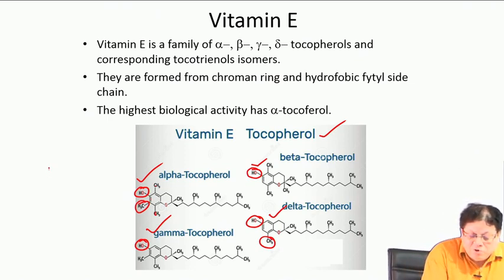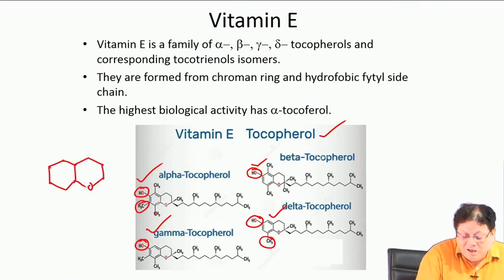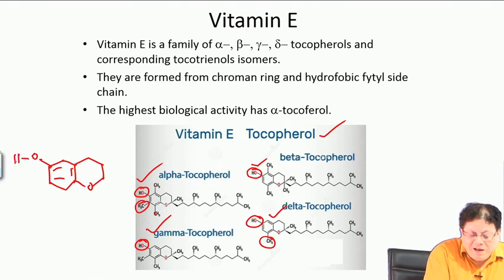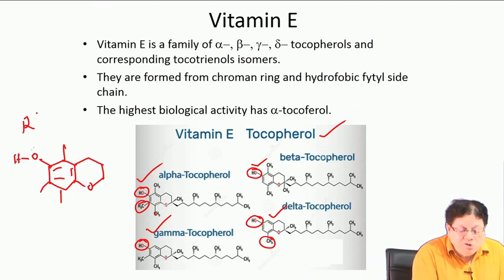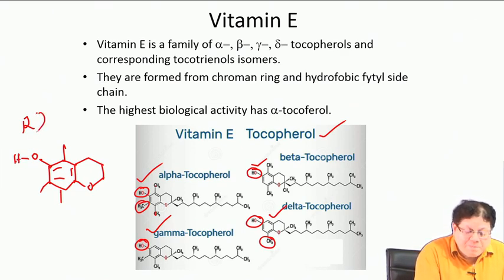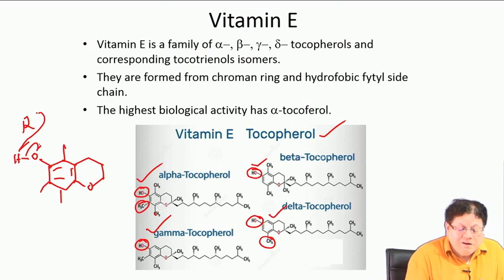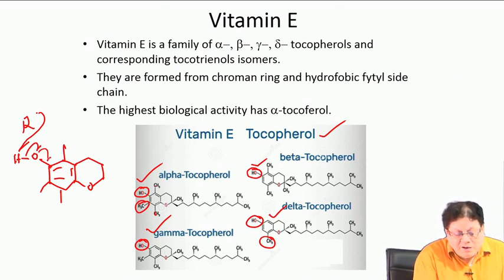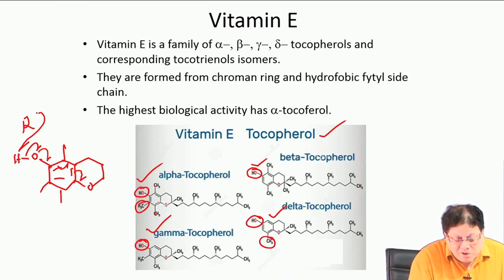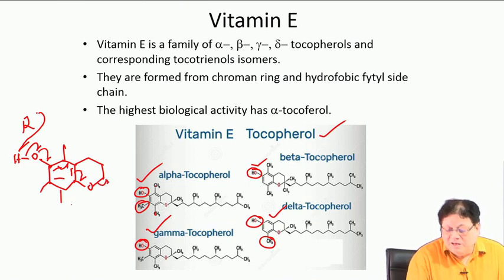Antioxidant means it can neutralize radicals. When a radical is produced in the body, the tocopherol — which has an OH group with various substituents — will immediately donate its hydrogen and become an O• radical.